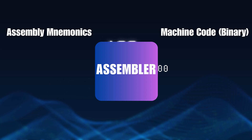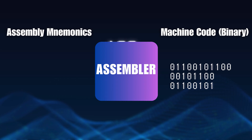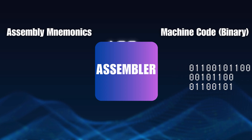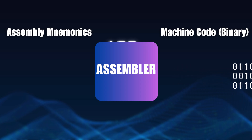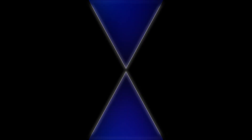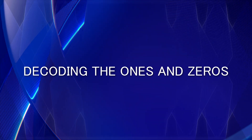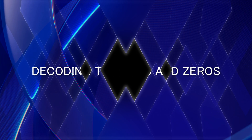A tool called an assembler handles the direct conversion from assembly into machine code — a perfect translation between text and binary. The key takeaway is that they represent the exact same instructions, just written in different formats. Now let's take a closer look at the binary format and start decoding what those ones and zeros actually mean.